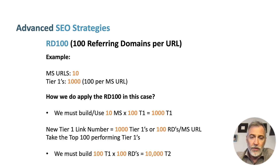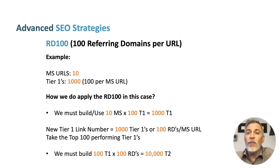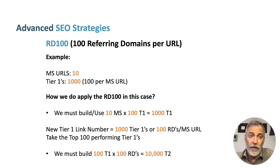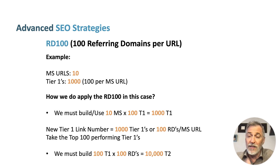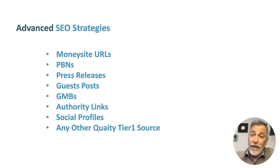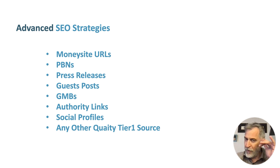Let's see an example. Let's say that you want to rank or boost 10 money site URLs. We must build for those 10 money site URLs at least 100 tier ones, which means we get 1,000 tier ones. From those 1,000 tier ones, we need the top 100 best performing ones and build at least 100 referring domains to those tier ones. So 100 tier ones times 100 referring domains equals 10,000 tier twos — this is the RD100.